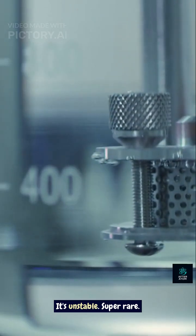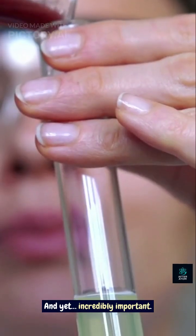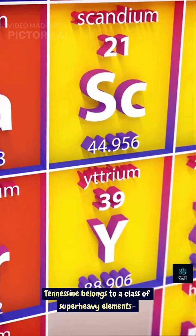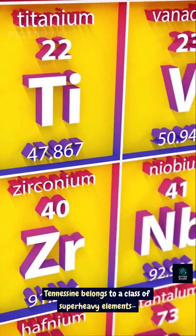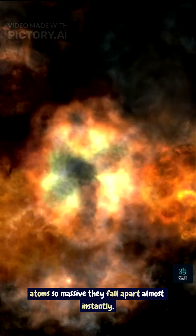It's unstable, super rare. And yet, incredibly important. Tennessine belongs to a class of super-heavy elements, atoms so massive they fall apart almost instantly.